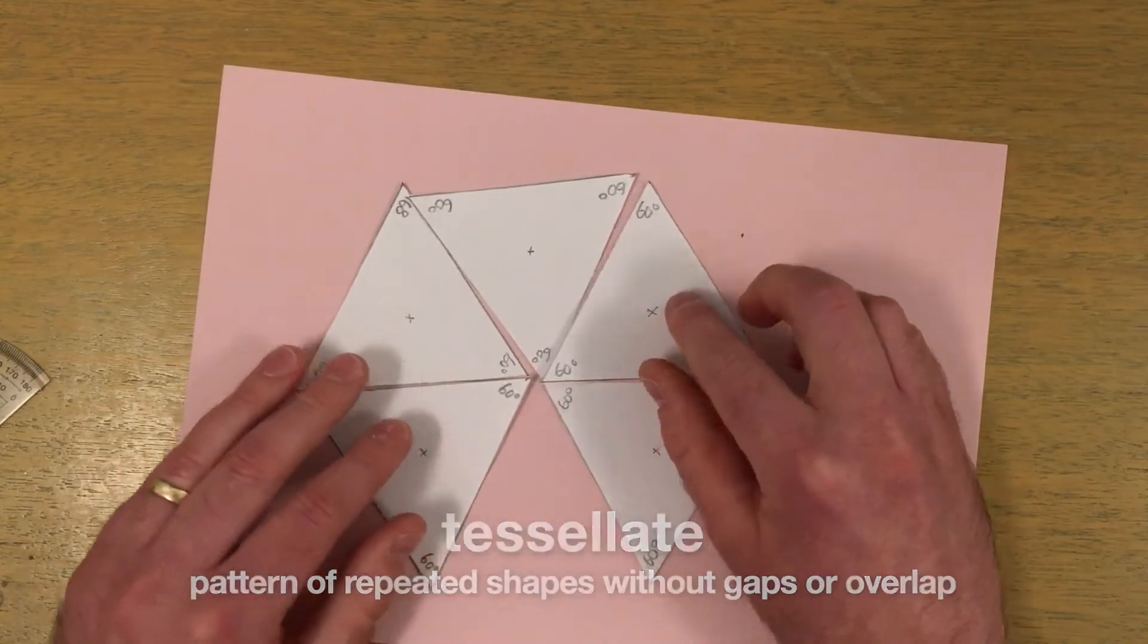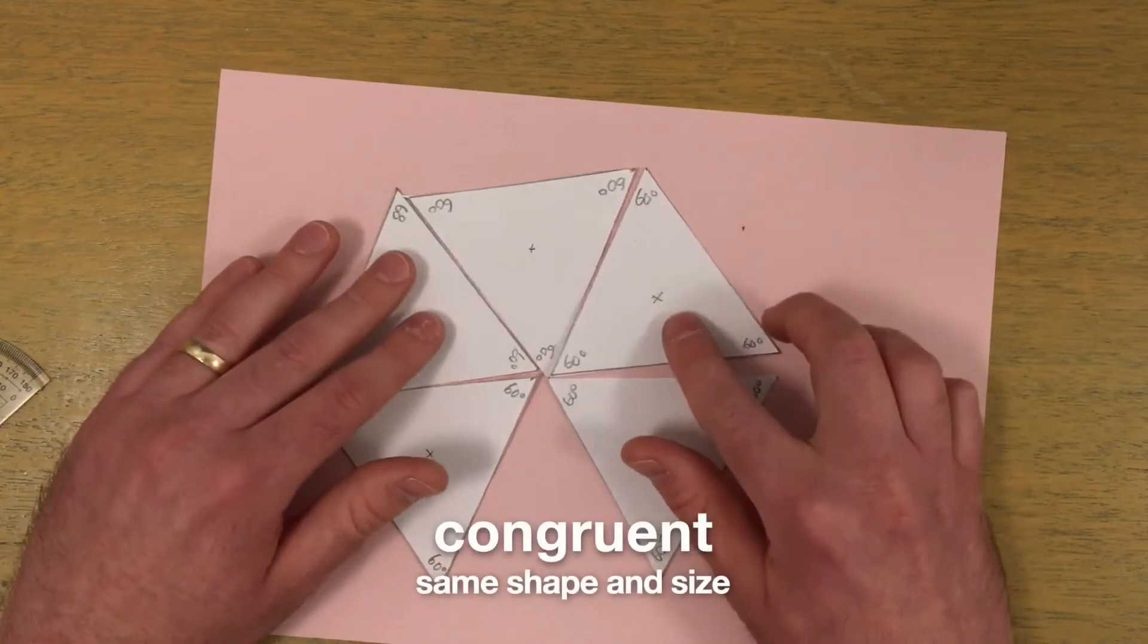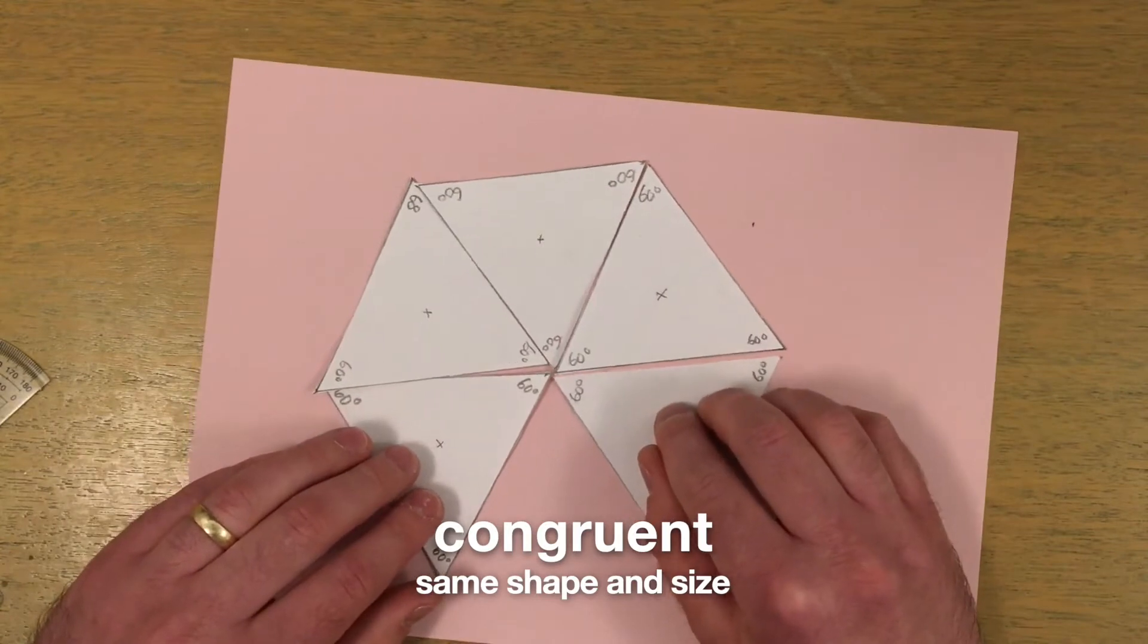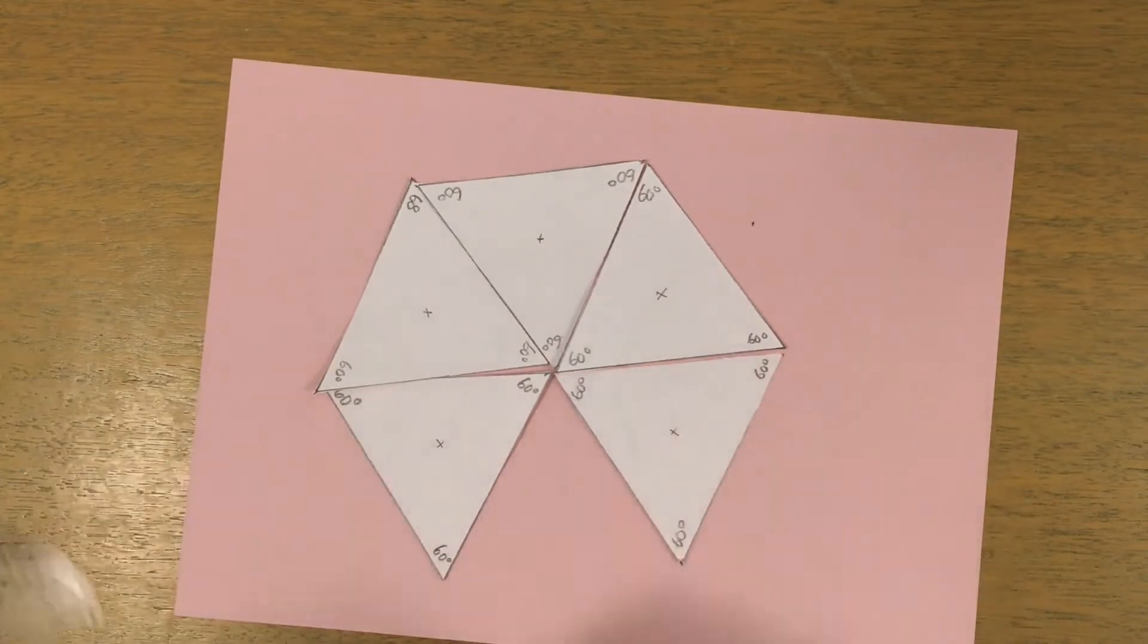One way to find out is to make some identical or congruent regular polygons. And one way to make regular polygons is to inscribe them in a circle.